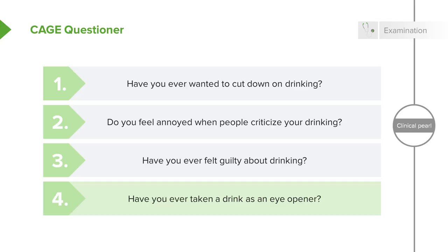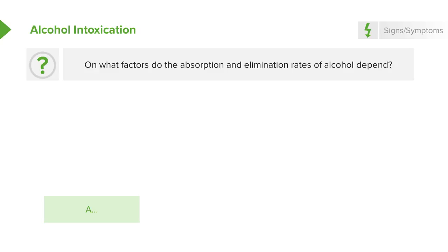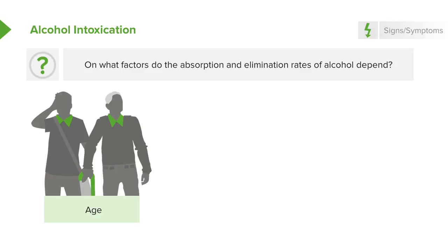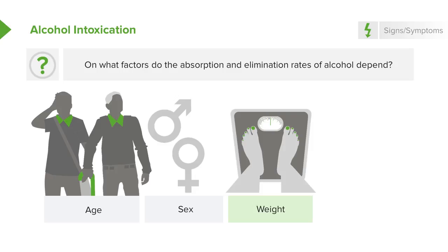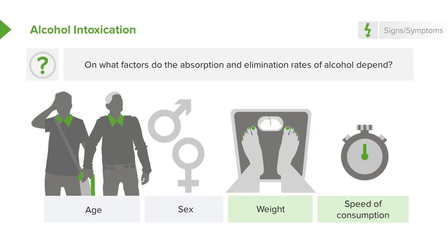What factors do the absorption and elimination rates of alcohol depend on? Age, sex or gender, weight, and also speed of consumption — all of these things are going to influence how quickly an individual can metabolize and process the alcohol consumed.